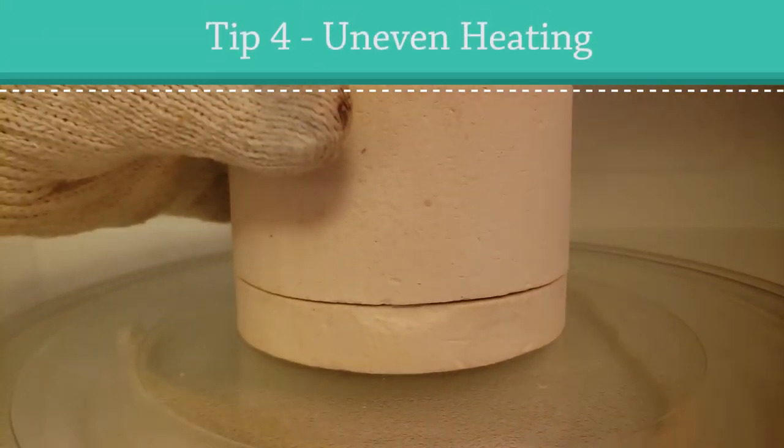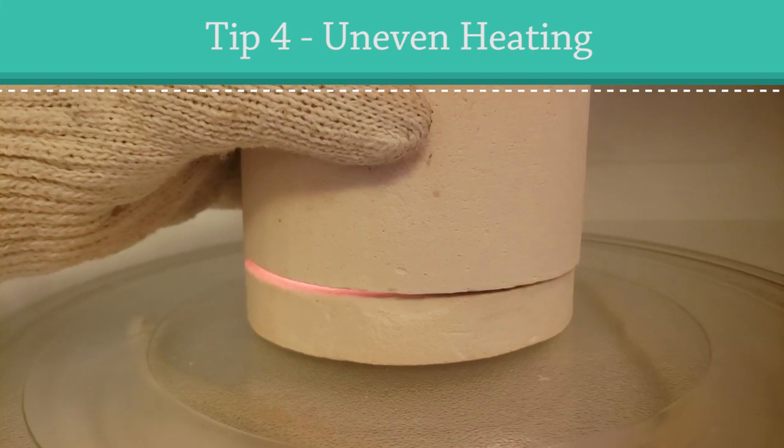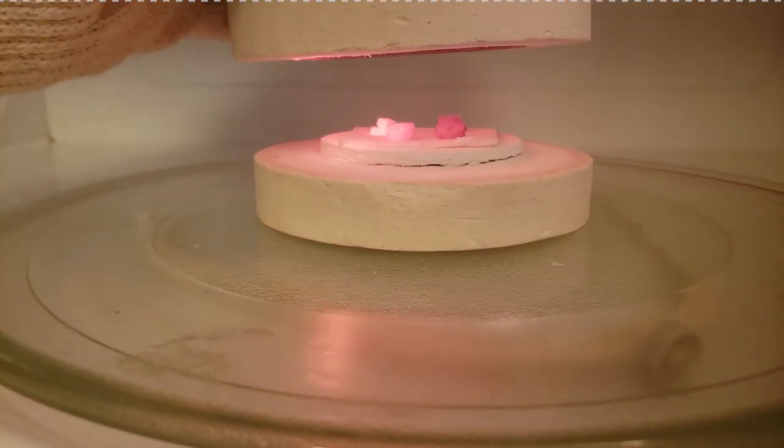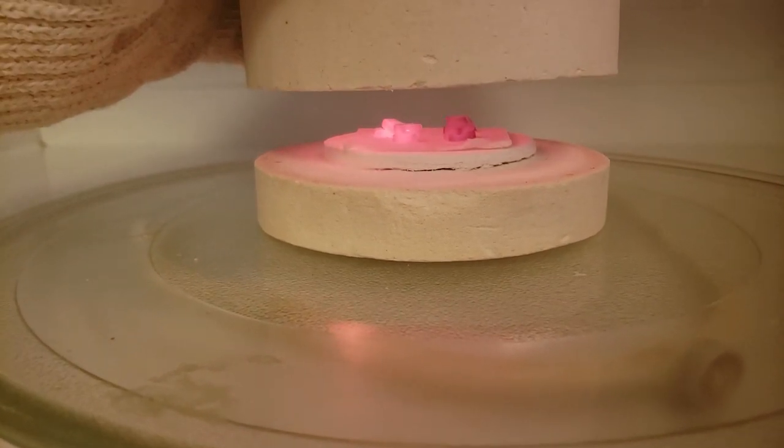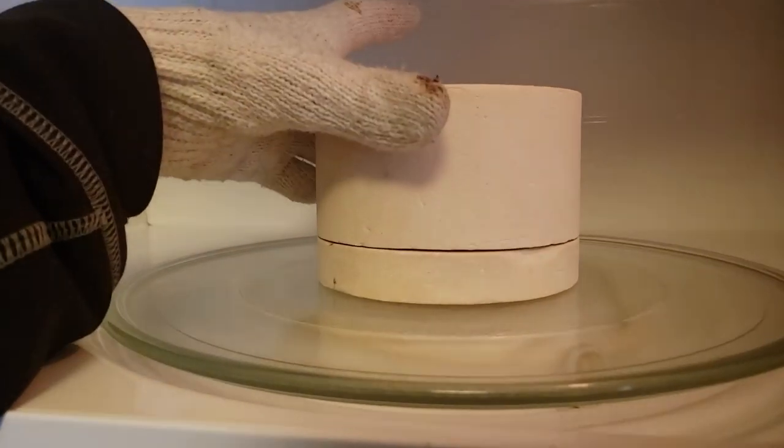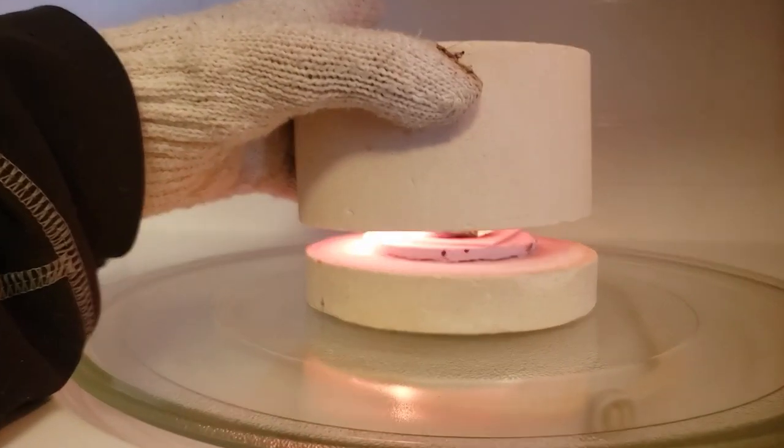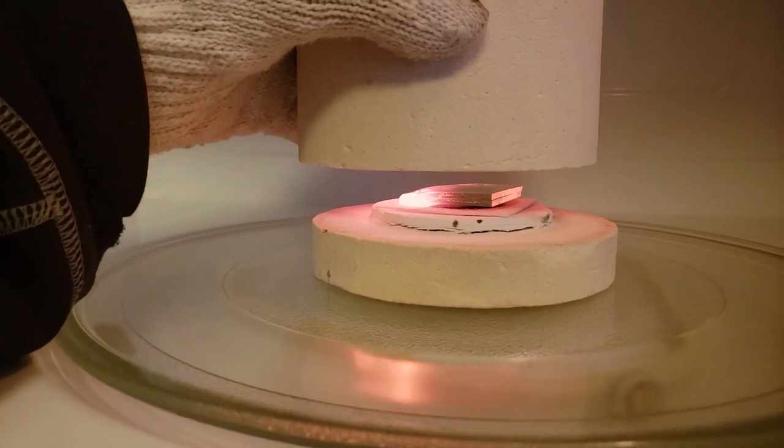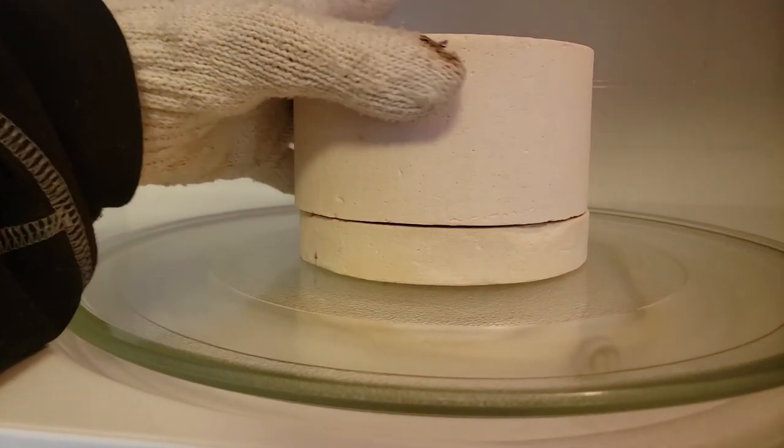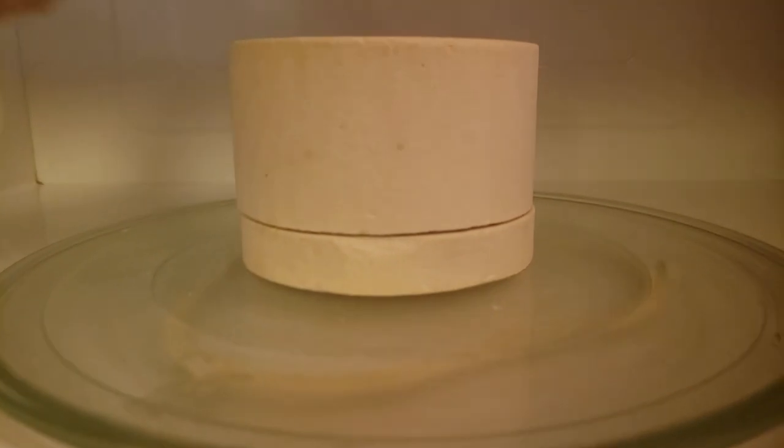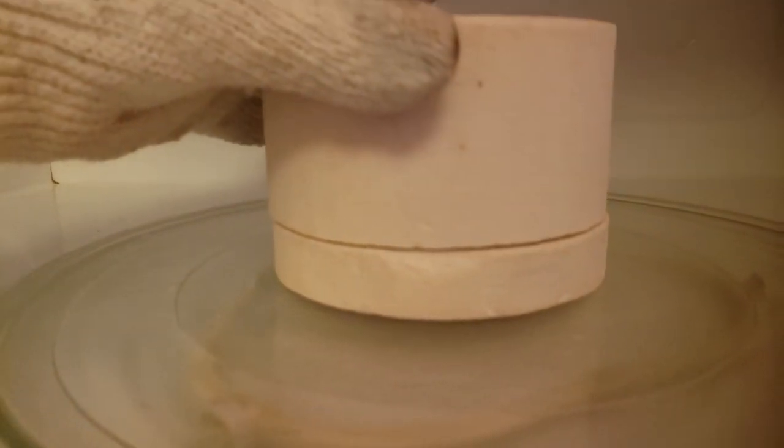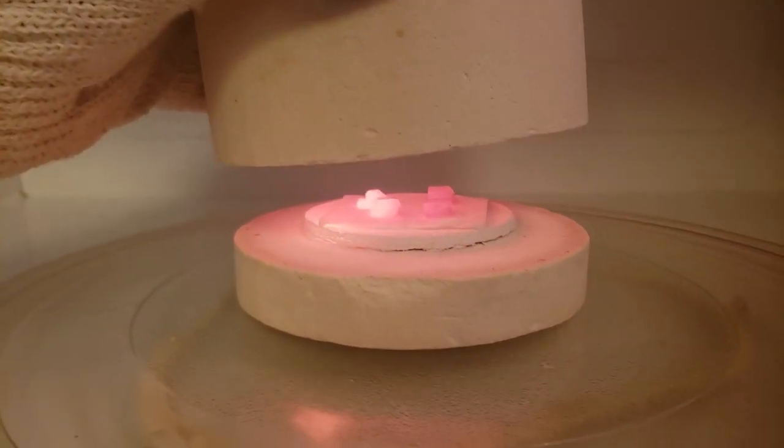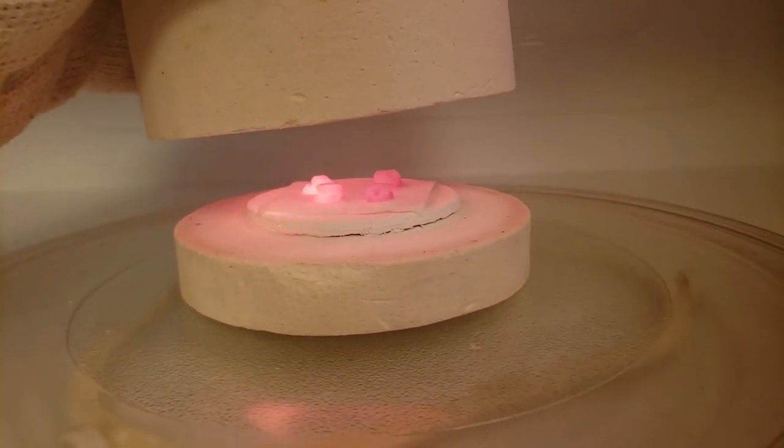Tip number four has to do with how the glass heats up in the microwave kiln. Sometimes when you're checking your pieces if you have more than one item or even sometimes across a larger item you will notice that one portion is heating up faster than the other. You'll notice that part of your glass may be dark and part of it may be starting to get that nice red orange glow. One way to avoid this is to try to make sure that all of your glass pieces have roughly the same weight.